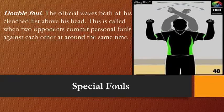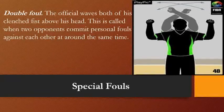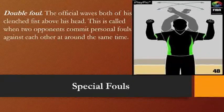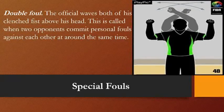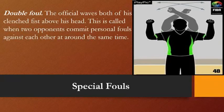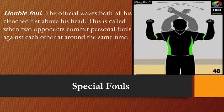Now for the special fouls. Double foul: the official waves both clenched fists. This is called when two opponents commit personal fouls against each other at around the same time — between an offensive and defensive player both battling for possession. The referee raises both hands and waves them, signaling the double foul. In a double foul, the alternating possession arrow is in effect.